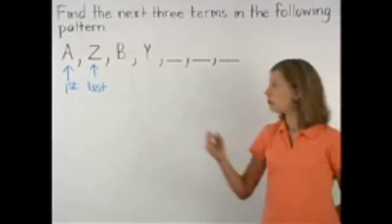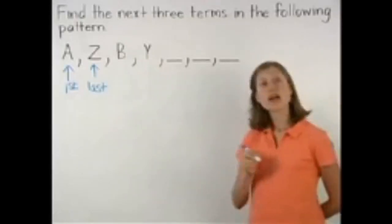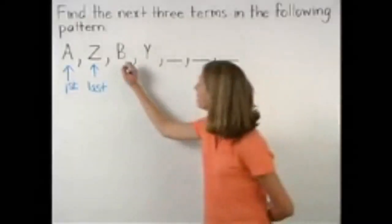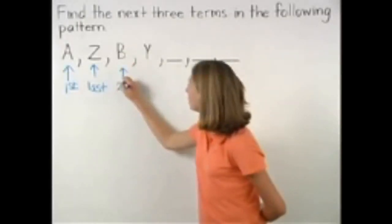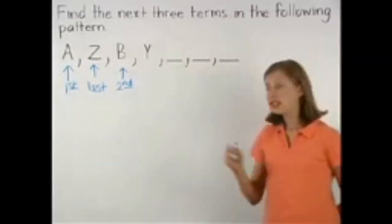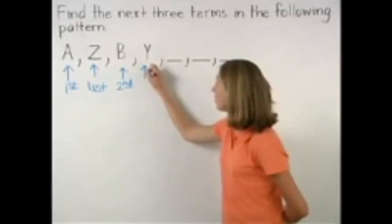Our next two terms are B and Y. B is the second letter of the alphabet and Y is the second to last letter of the alphabet.